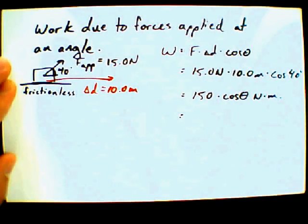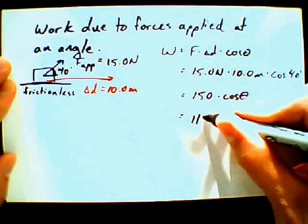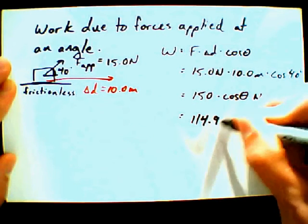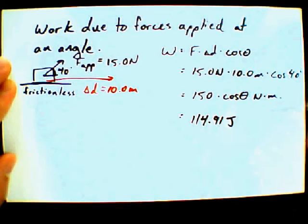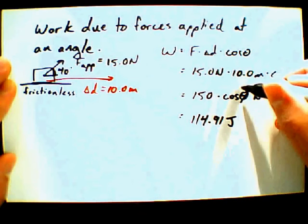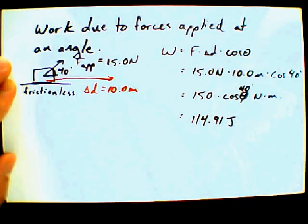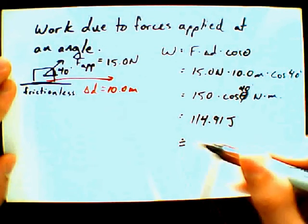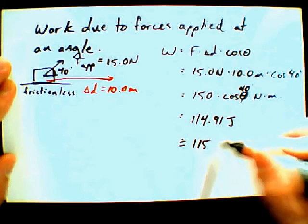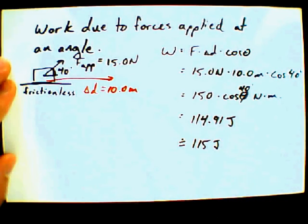Hannah? 114.91 joules. My notation is getting sloppy because I'm getting nervous under this video camera. Okay. And we can round it off to 3 sig figs and 115 joules. It's going to be our rounded value.